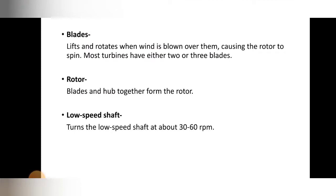Next component: blades — the propeller blades. Lift and rotation occur when wind is blown over them, causing the rotor to spin. When wind passes over the blades, the blades rotate, the rotor moves, the generator rotates, and electricity is generated. Most turbines have either two or three blades — commonly two or three blades for windmills.